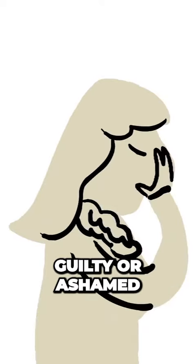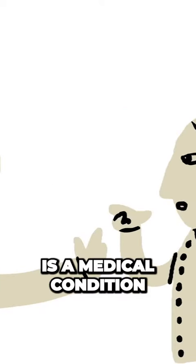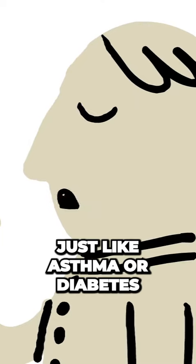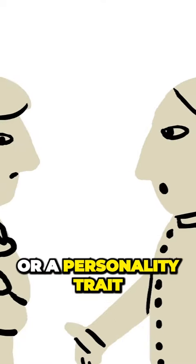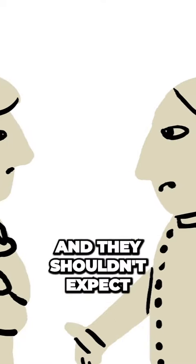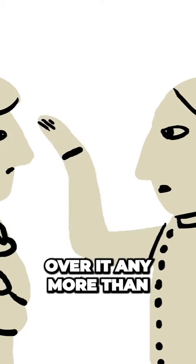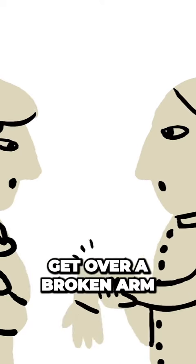If they feel guilty or ashamed, point out that depression is a medical condition, just like asthma or diabetes. It's not a weakness or a personality trait, and they shouldn't expect themselves to just get over it any more than they could will themselves to get over a broken arm.